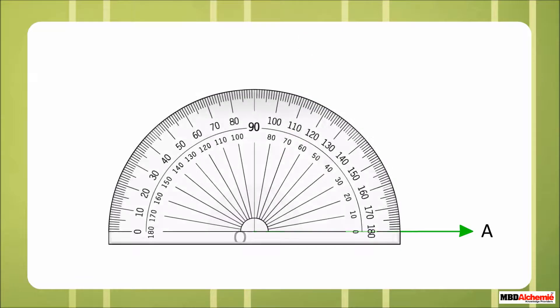We can also use a protractor to define the types of angles. Acute angle. Acute angle measures less than 90 degrees.